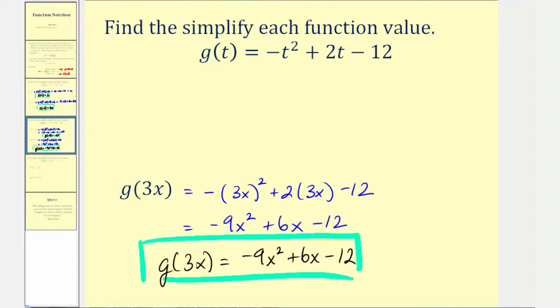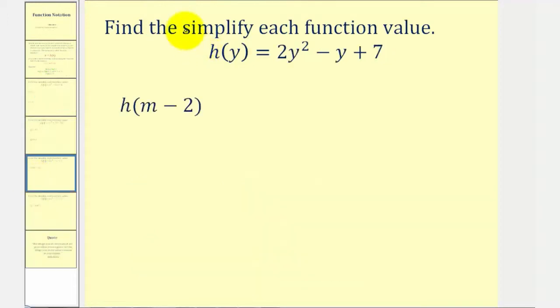Let's go ahead and take a look at one more example. Here we're given the function h of y equals 2y squared minus y plus 7, and we're asked to find h of the quantity m minus 2. So in this case, we'll substitute the quantity m minus 2 for y. So this would give us 2 times the quantity m minus 2 squared minus the quantity m minus 2 plus 7.